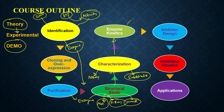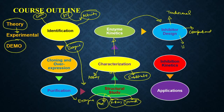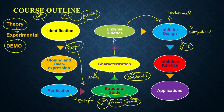Once done with enzyme kinetics, we are going to talk about how you can develop inhibitors. Within inhibitor development, we will discuss how people were doing inhibitor development using traditional approaches, and we will also talk about the computational approach. We are also going to talk about high-throughput screening of these inhibitors for developing them as drug-like molecules. Apart from inhibitor designing, we are also going to talk about inhibition kinetics so you can understand the mode of inhibition.